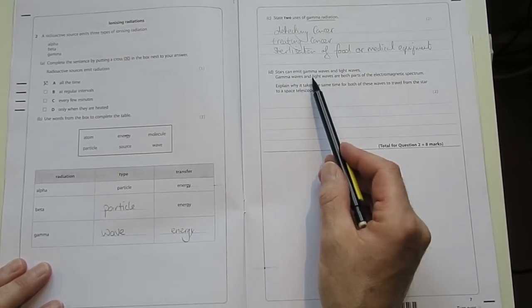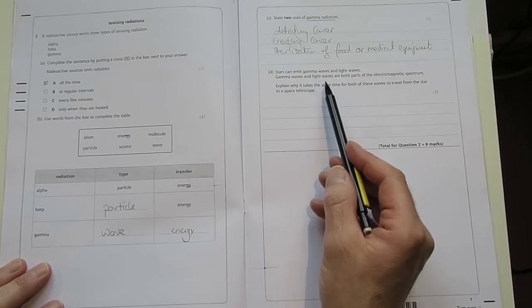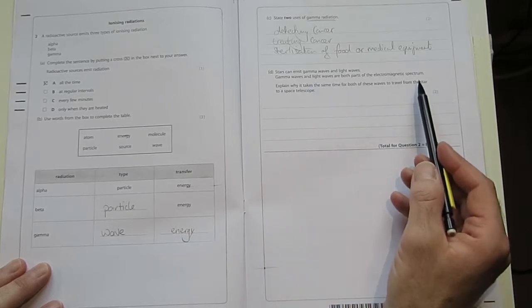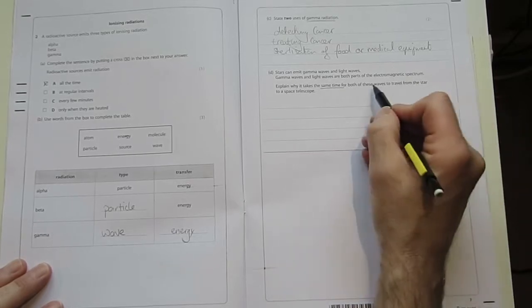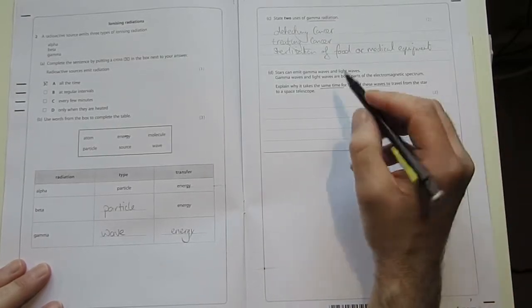Stars can emit gamma waves and light waves. Gamma waves and light waves are both parts of the electromagnetic spectrum. Explain why it takes the same time for both of these waves to travel from the star to a space telescope.